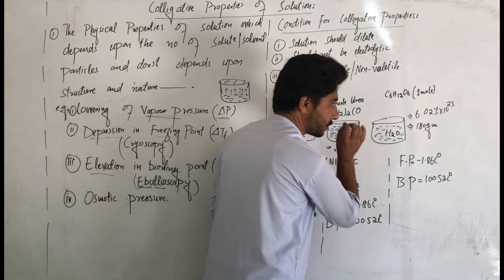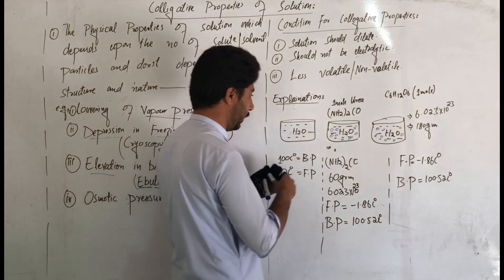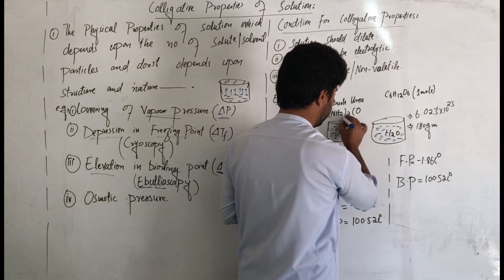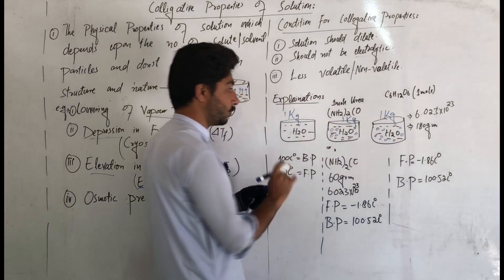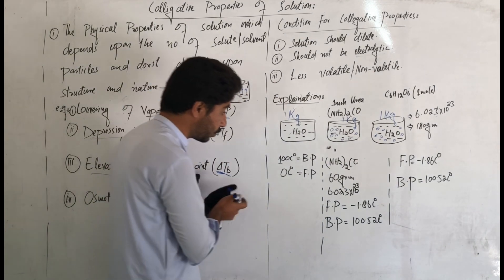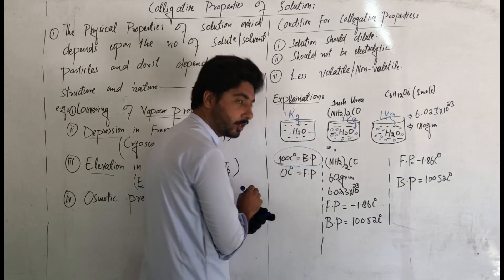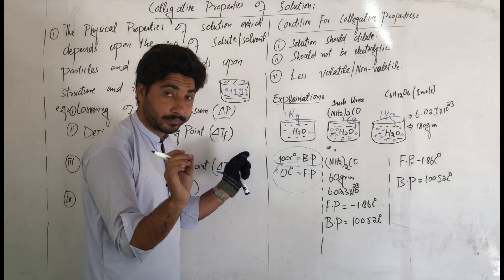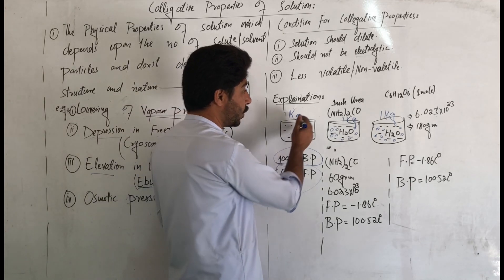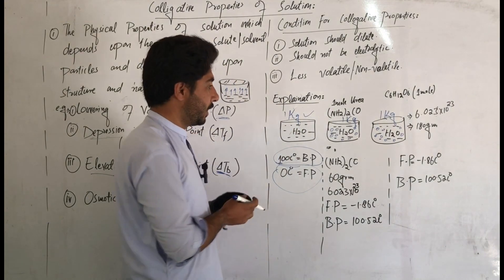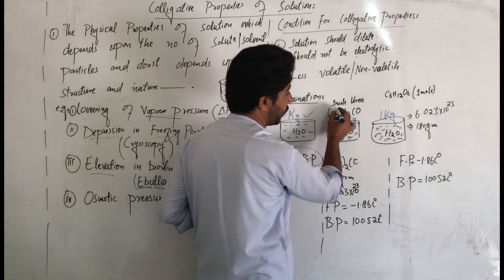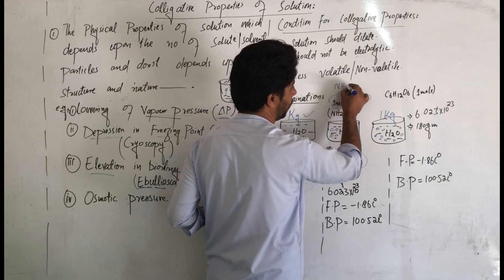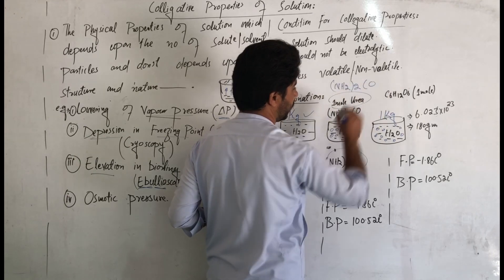Let's take an example to explain colligative properties. We have one kg of pure water. Pure water has a boiling point of 100 degrees centigrade and a freezing point of zero degrees centigrade. Now we mix a solute — urea — into the water. The formula of urea is NH2-CO-NH2.